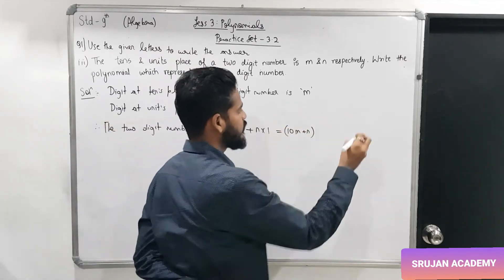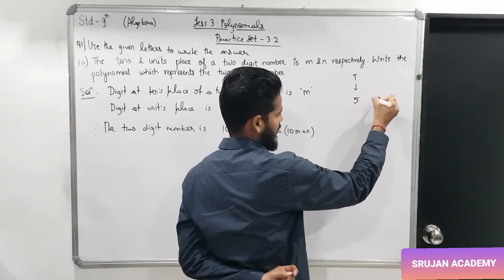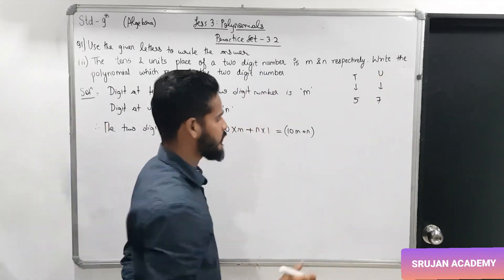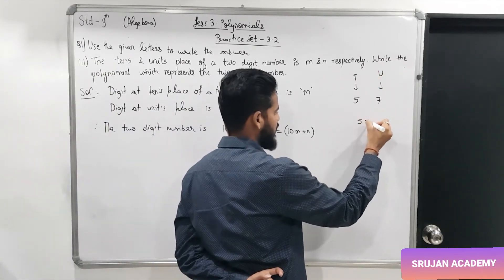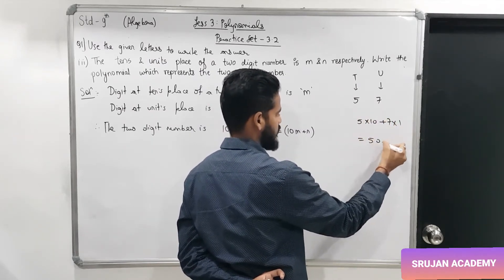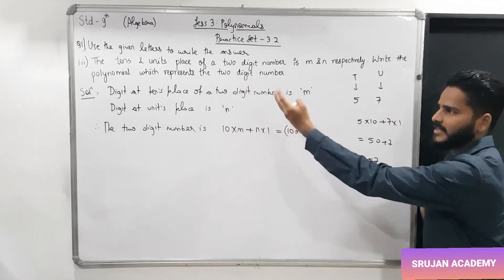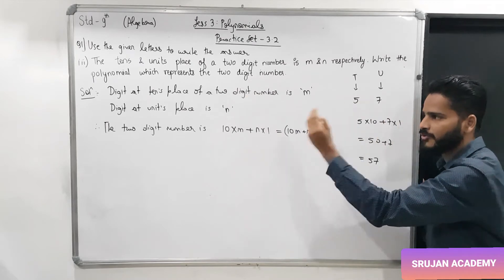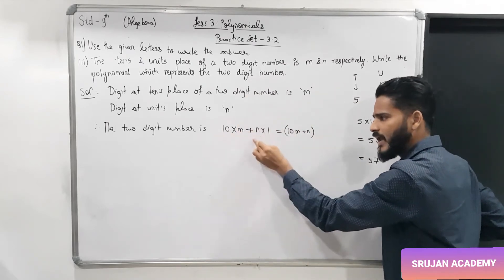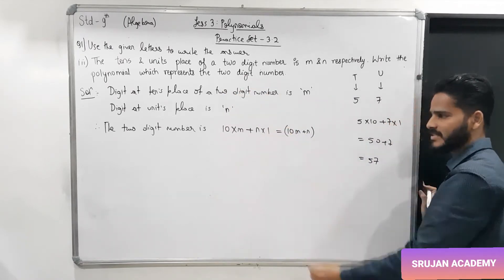For example, if 5 is the digit at tens place and 7 is the digit at units place, we multiply 5 by 10 and 7 by 1 and add them to get 57. The same process applies here: tens place digit is m, units place digit is n, so the number is 10m + n.